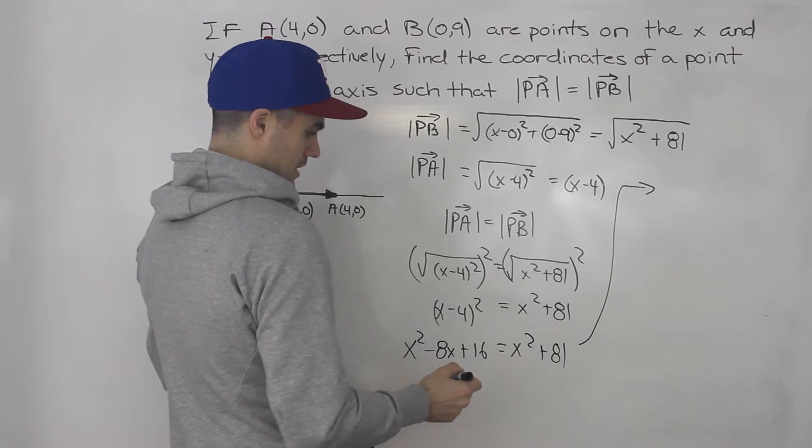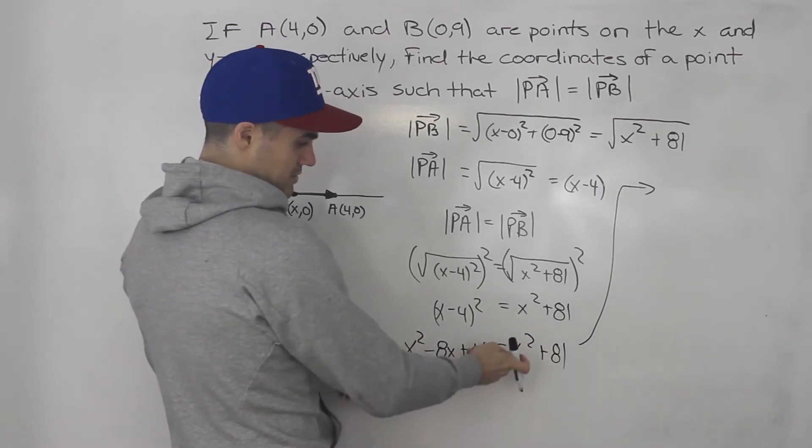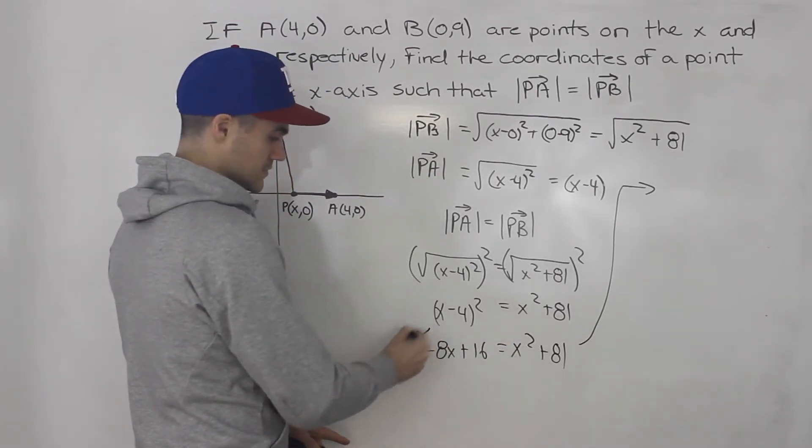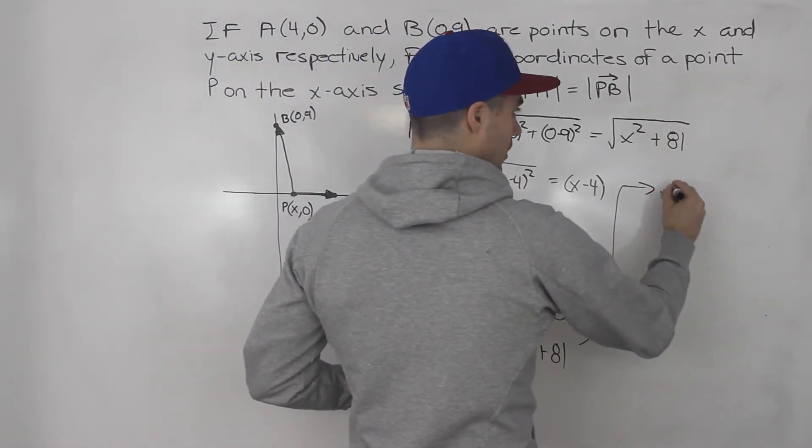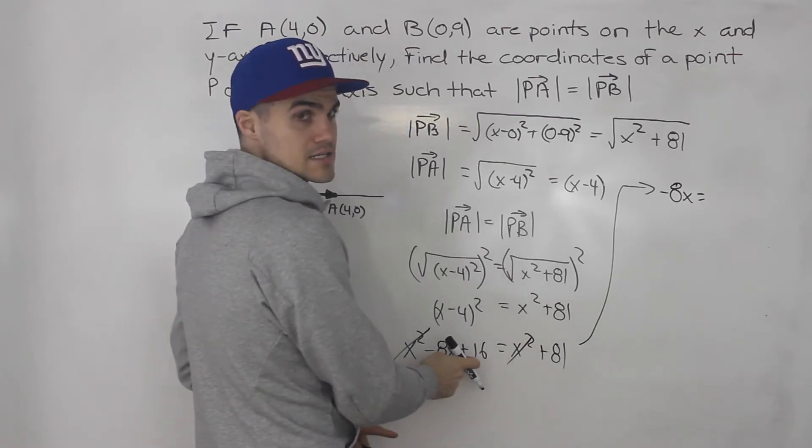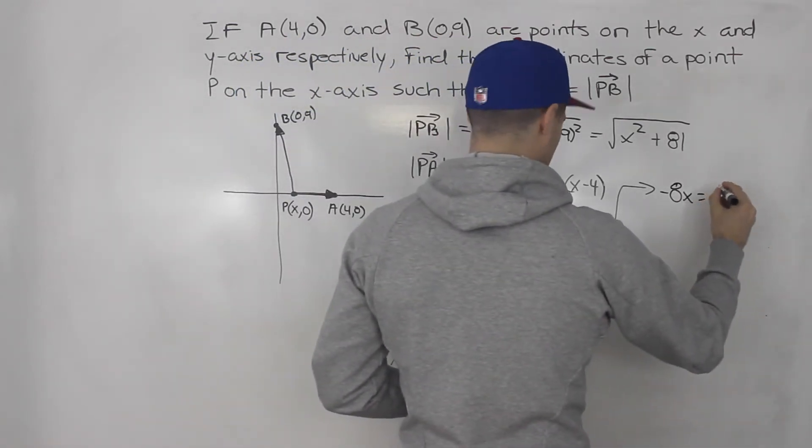And then continuing, let's bring all the x's on one side, all the numbers on one side. Notice the x² terms cancel out. The -8x stays on the left side, and we'll have 81 minus 16 when we bring the 16 over. 81 - 16 gives us 65.